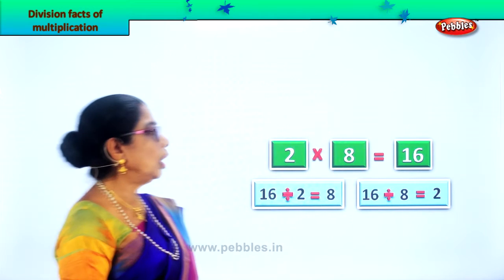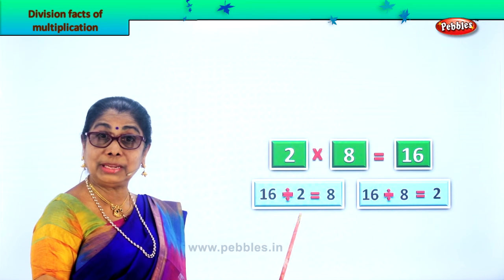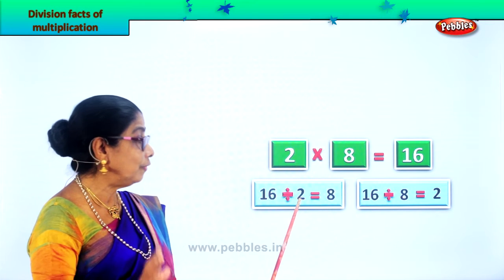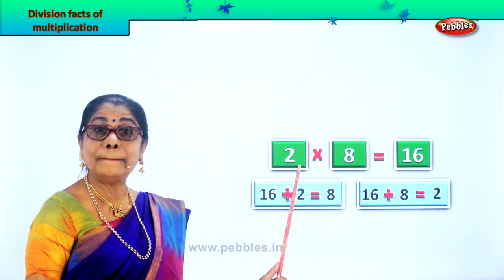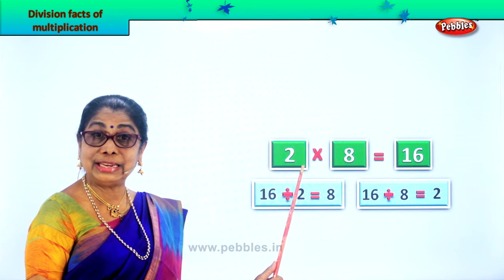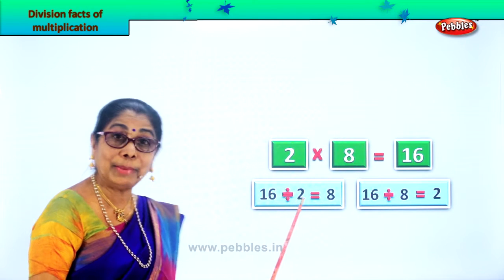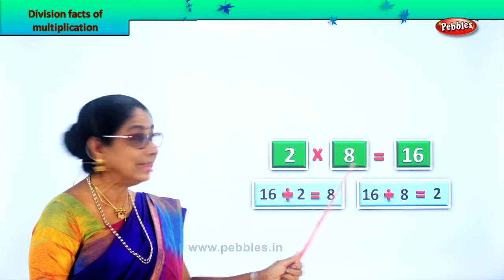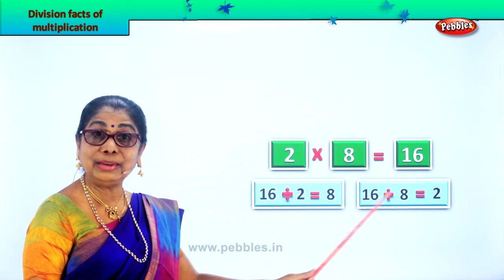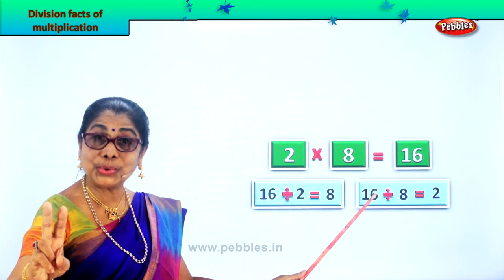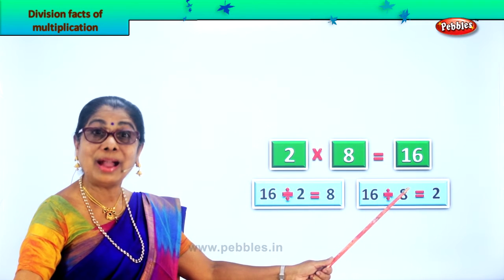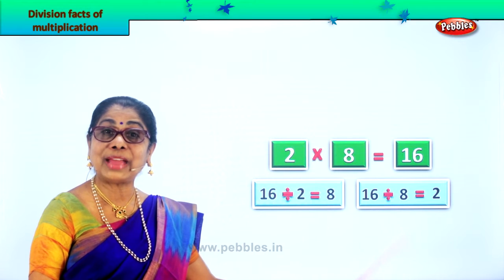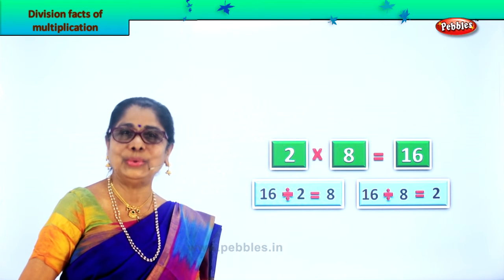You know the table — when you look at sixteen, you know the two times table. Sixteen divided by two gives you eight. Eight twos are sixteen, so very clear. Sixteen divided by two gives you answer eight. Now here, sixteen divided by eight — eight goes into sixteen twice. So sixteen divided by eight gives you answer two. Did you understand? One multiplication fact, we got two division facts.